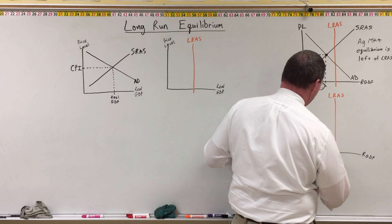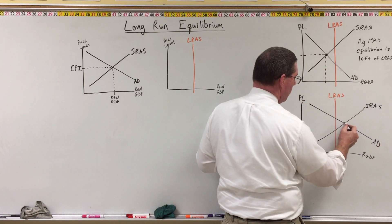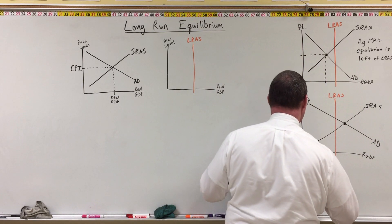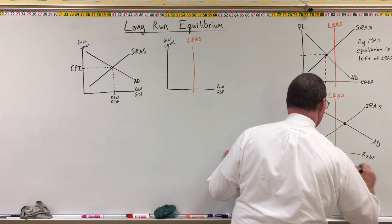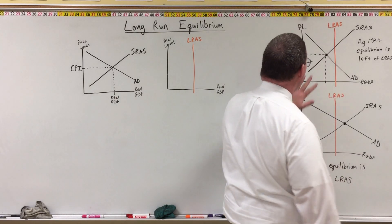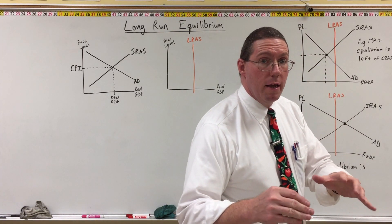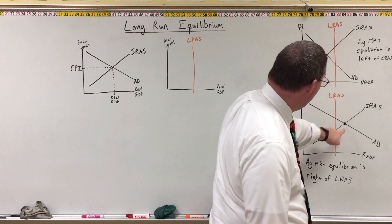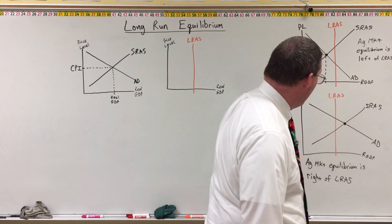The second possibility is that we have our short-run aggregate supply curve and aggregate demand curve, and in this case look at the intersection point — the aggregate market equilibrium is to the right of long-run aggregate supply. So it's important to understand where this intersection occurs relative to long-run aggregate supply. Here the equilibrium is to the left; there the aggregate market equilibrium intersection is to the right of the long-run aggregate supply curve. That's two of the possibilities.